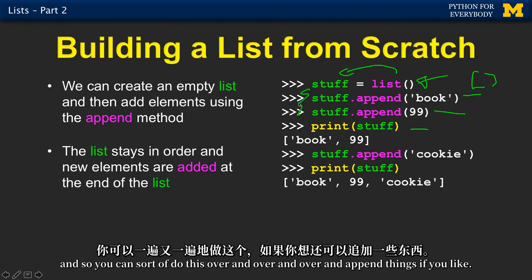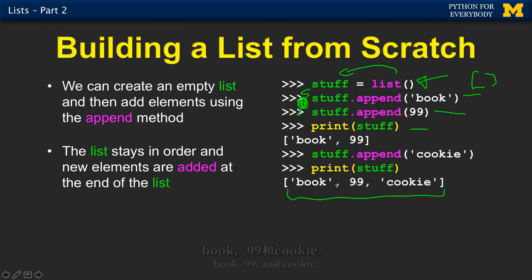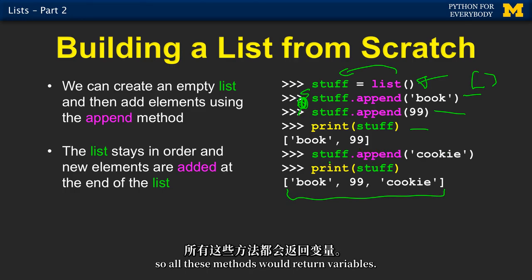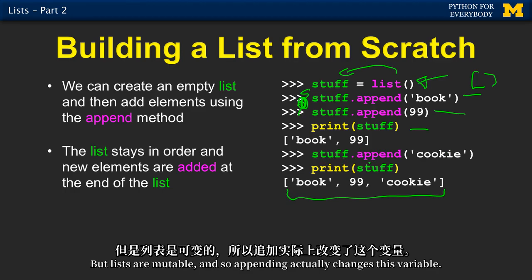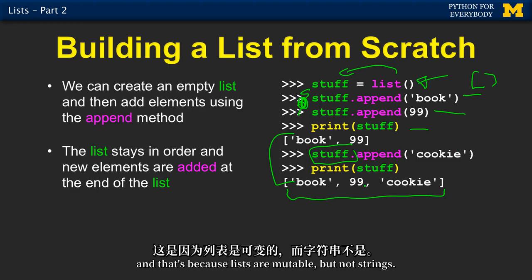You can do this over and over and append things if you like. We can append the string 'cookie', and at the end you've got three things in there: book, 99, and cookie. Append is a method. Now recall that strings are not mutable, so all those string methods would return variables, but lists are mutable. Appending actually changes the variable, so note that stuff is different from before to after the append — that's because lists are mutable, but not strings.